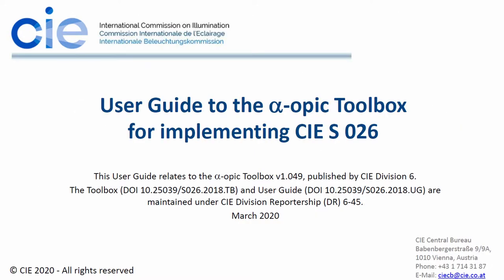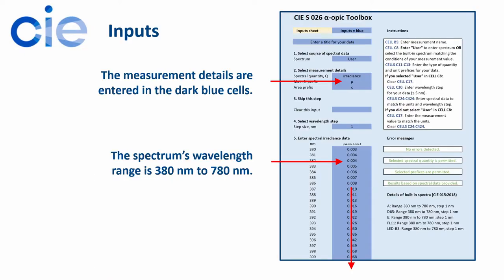Can you explain how to use the toolbox? How does it work? Yeah, so ideally we want people to enter spectral measurement data to do their calculations with. And I have an example here with an LED measurement, and I hope that's on the screen for you. And you can see that the dark blue cells are the inputs in the toolbox.